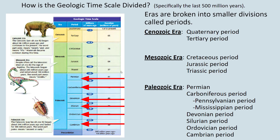Now you know where the word comes from — it's a geologic time period within the Mesozoic era. The Cenozoic era is broken up into the Tertiary and the Quaternary periods. Good news: you live in the Quaternary period! The geologic time scale is split into eras, and those eras are split into smaller sections of time called periods.